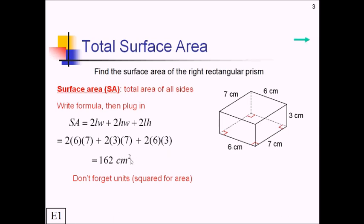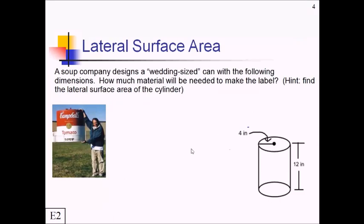For this next problem, a soup company designs a wedding-sized can with the following dimensions shown over here. We want to know how much material is going to be needed to make the label. So as a hint here, they're saying find the lateral surface area of the cylinder. So in general, we need two concepts for this. First, let's talk about the base of one of these kind of shapes.